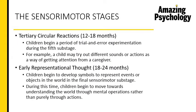The fifth sub-stage is tertiary circular reactions, occurring between the 12th and 18th month. During this stage, the child starts experimenting through trial and error, such as making funny sounds to get the caregiver's attention, or tossing things down to see if somebody picks them up and gives them back. These are the different kinds of experiments the child starts conducting.